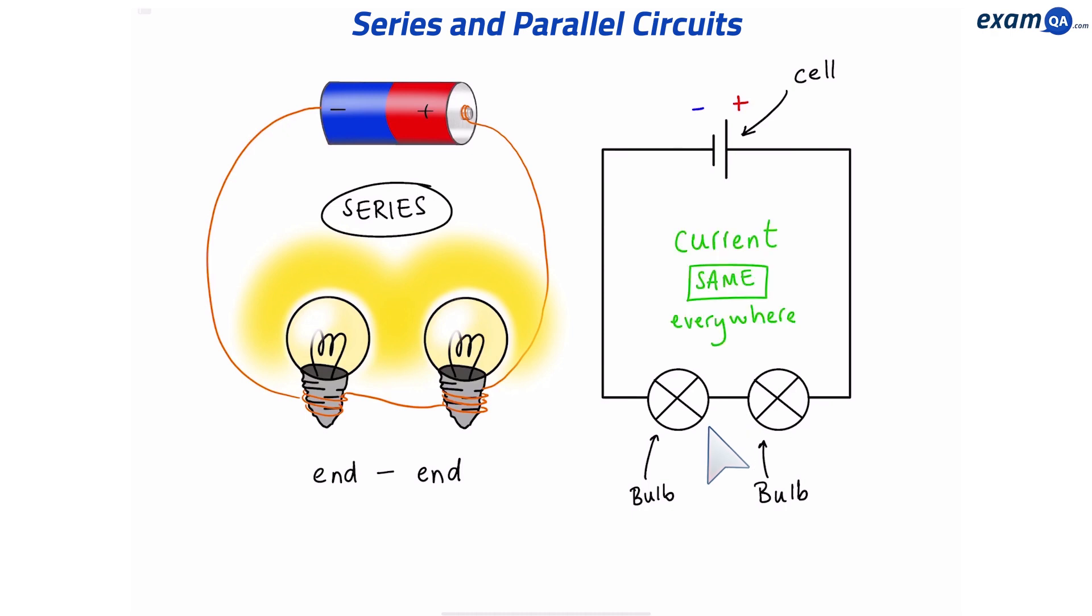Now one rule about a series circuit is that current is the same everywhere. That means even if I move the bulbs to over here, they're still going to have the same current and shine with the same brightness.